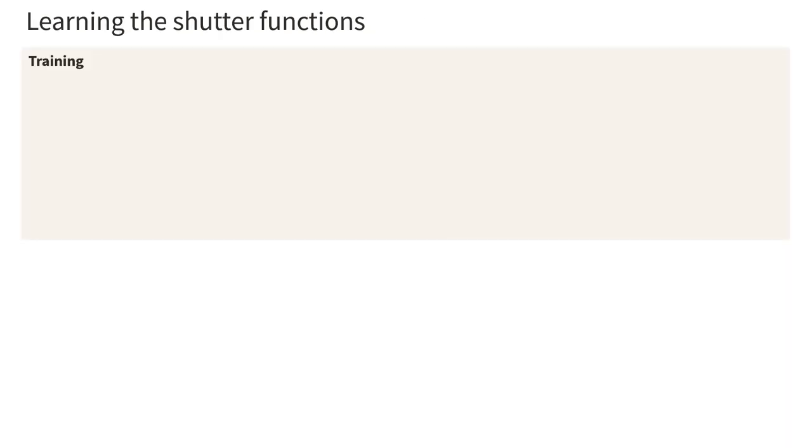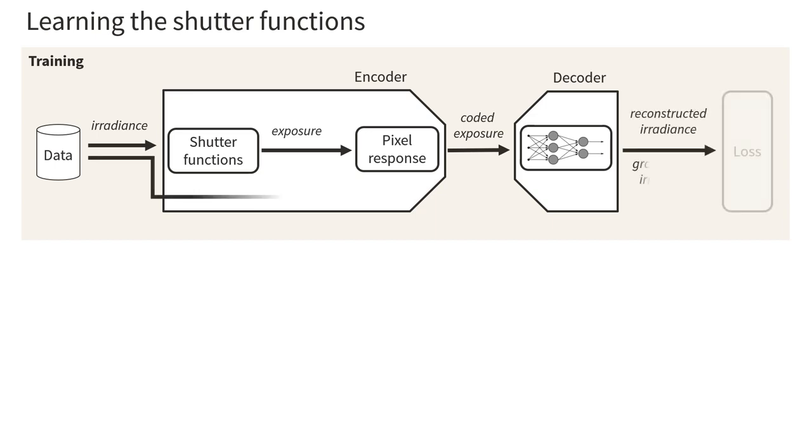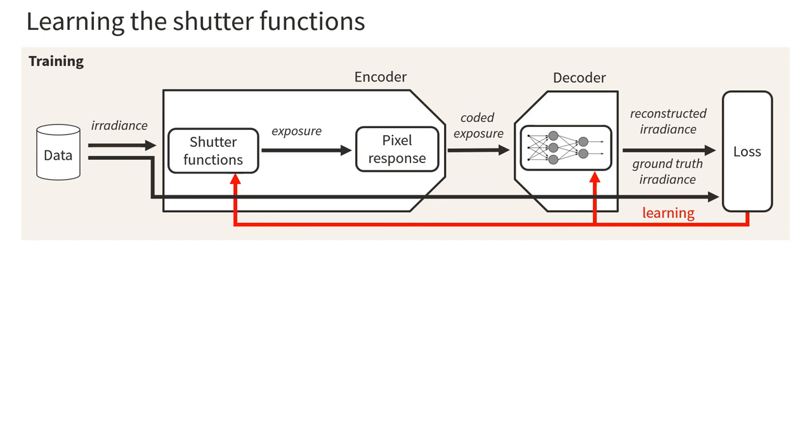The shutter functions are learned along with their decoder in an end-to-end fashion. This is performed in simulation, in which irradiance data is fed to the encoder, and the shutter functions are used to create a coded exposure. Coded exposures are output from the encoder to the decoder that reconstructs the irradiance. At training time, this is fed along the ground truth irradiance to the application-specific loss. Backpropagation is used on the whole architecture to learn the parameters of the shutter function as well as the neural network decoder.